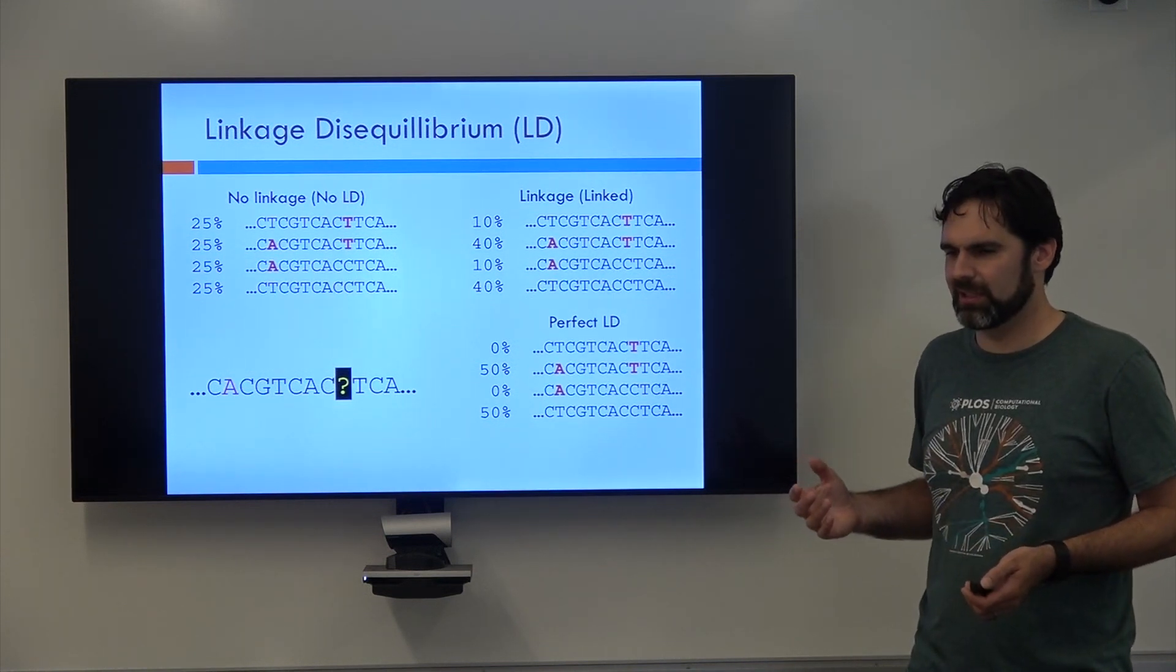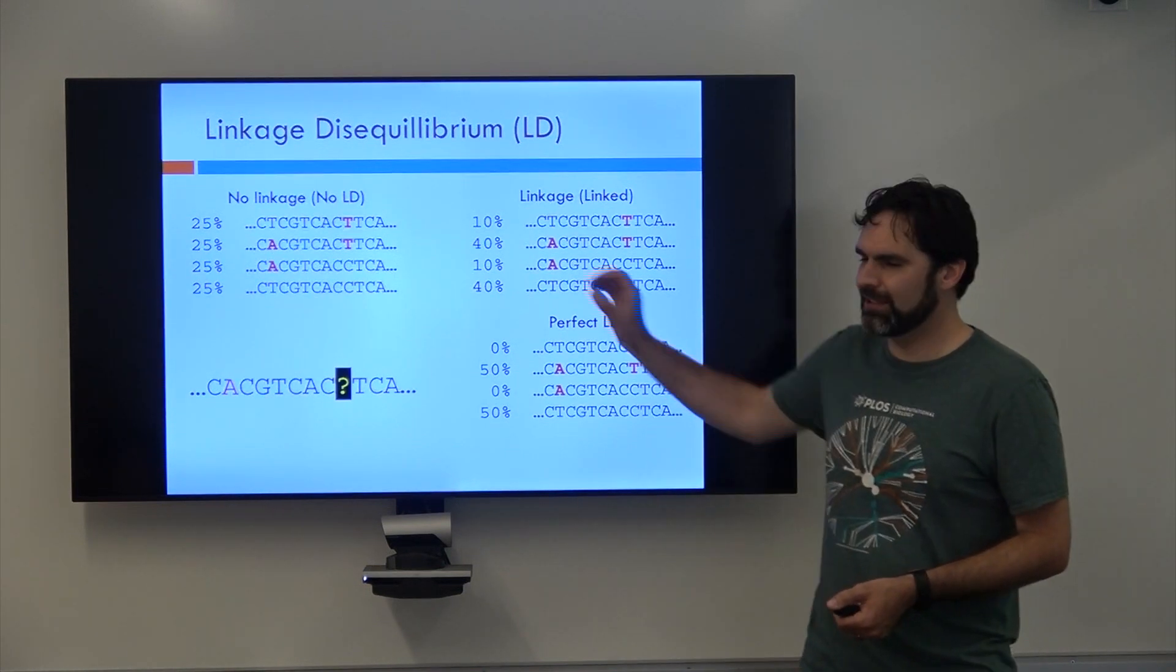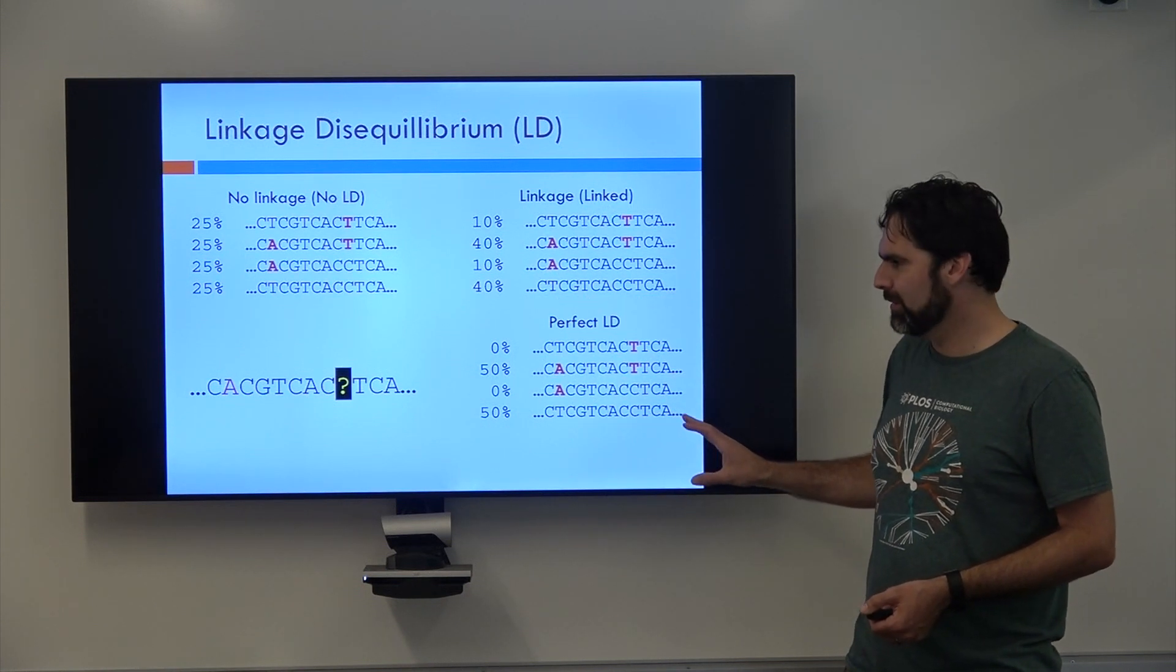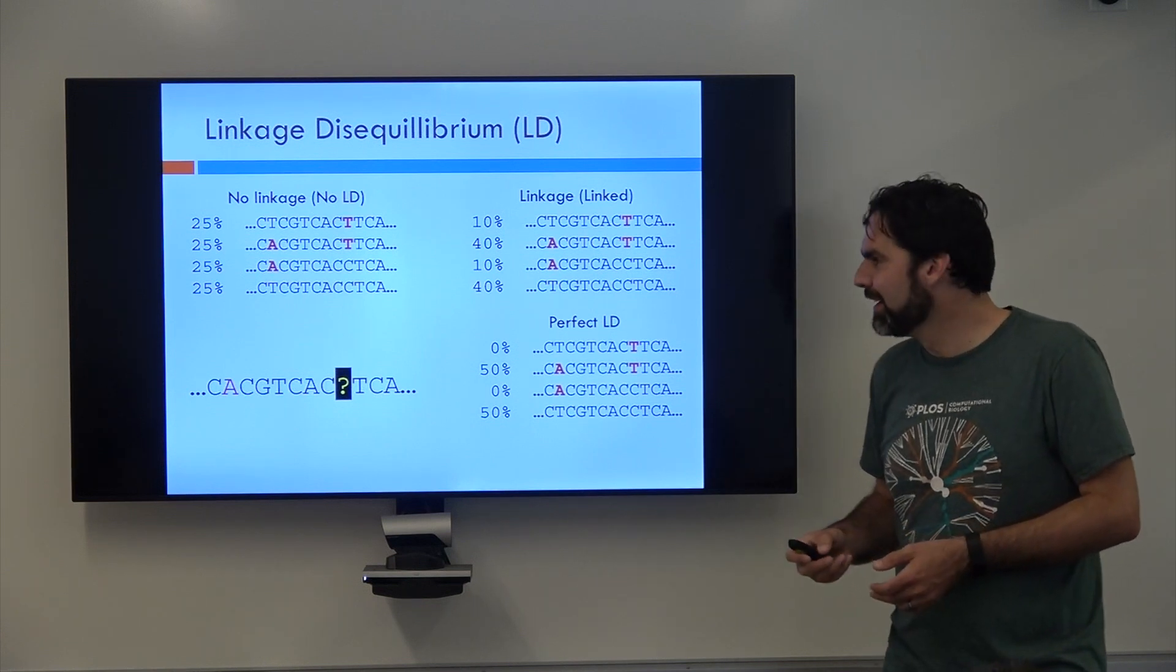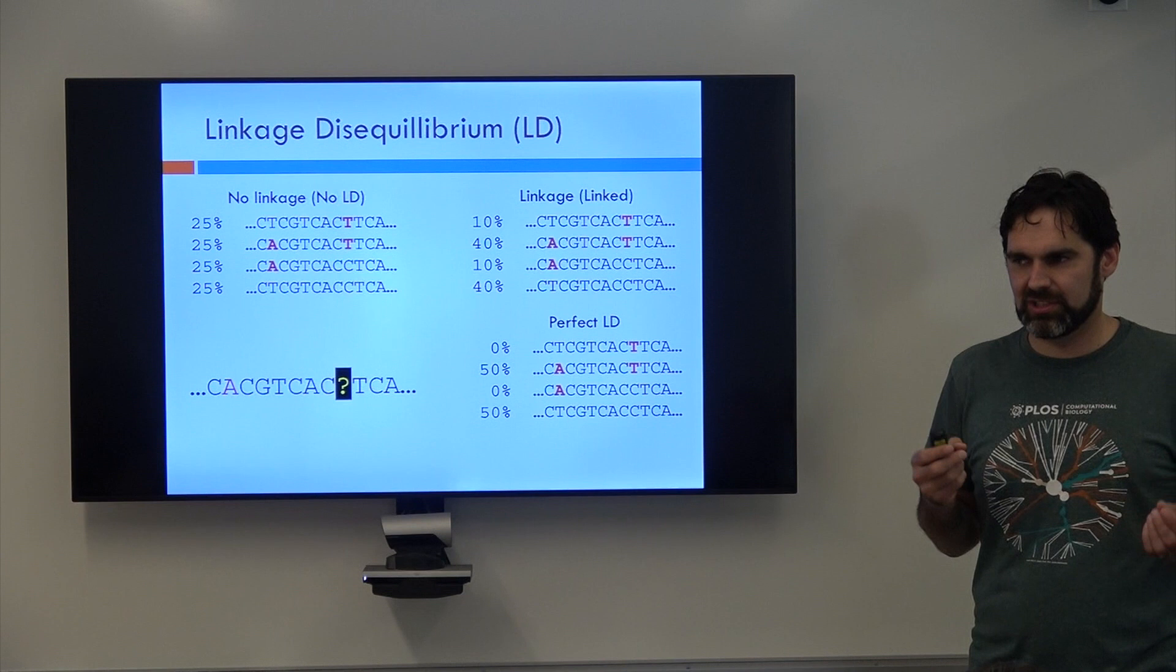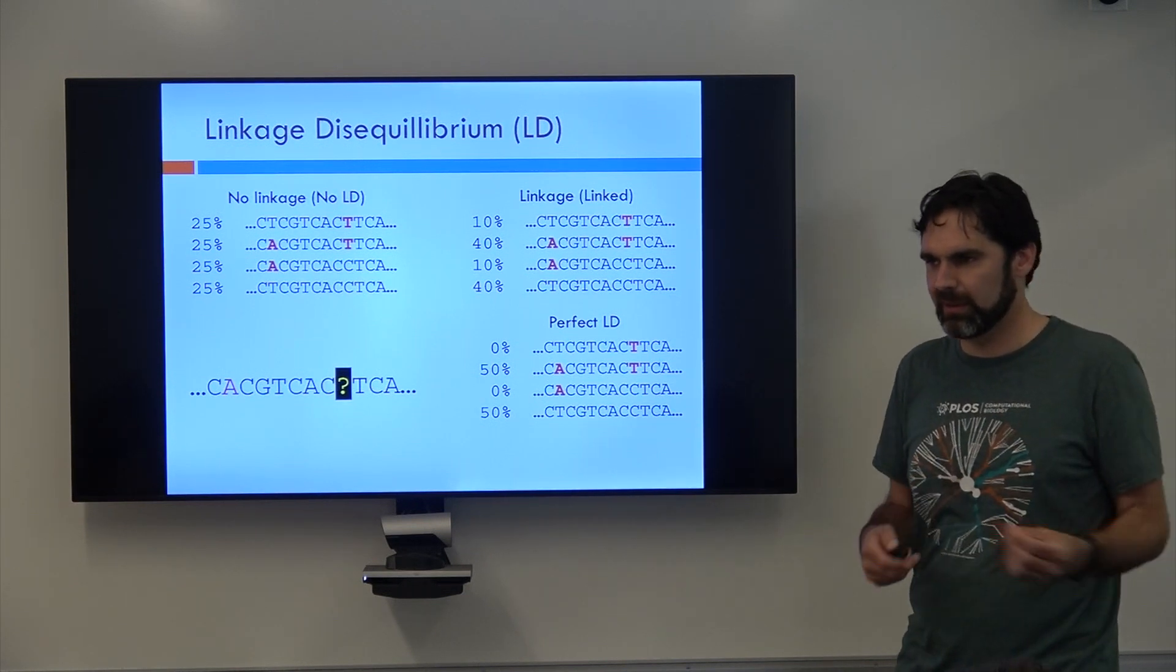I think those are really the only two terms people will ever use to describe this. So there's this whole spectrum between no linkage or no LD and perfect LD, which we will obviously assign a number to it because we're computational people. But this is essentially what linkage is. It tells you how much information is shared between two, or how much you know about one variant based on observing another one.